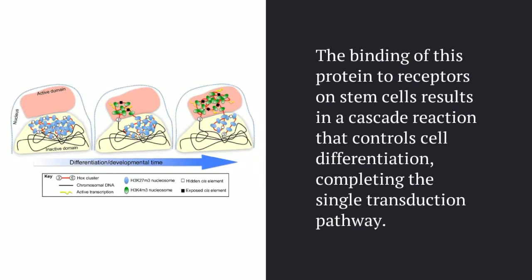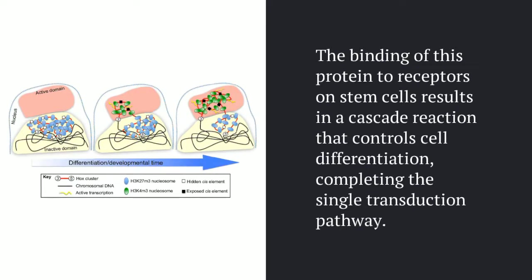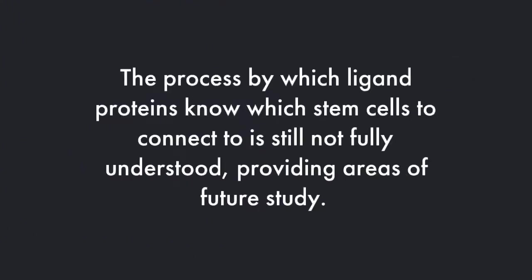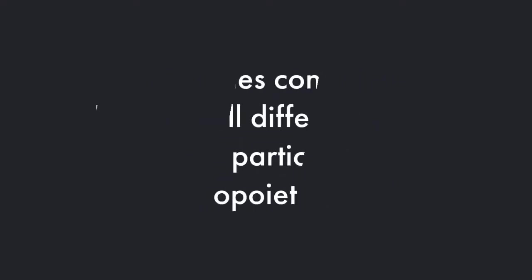As we've seen with other signaling molecules, there's always an end result for these signal transduction pathways. With Hox proteins, the end result is cell differentiation. One area that scientists are still researching is the process by which these ligand proteins know which stem cells to connect to and how many they need to differentiate to form all the appendages that organisms have — so this remains an active area of research.